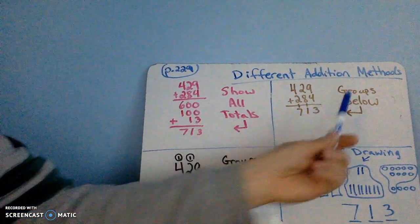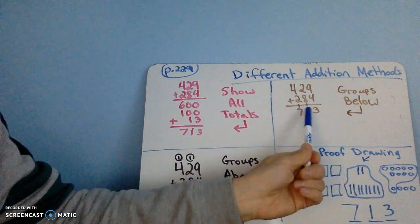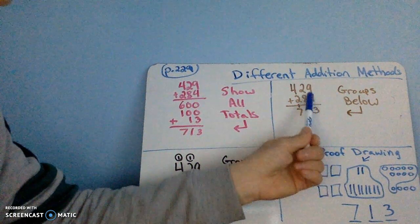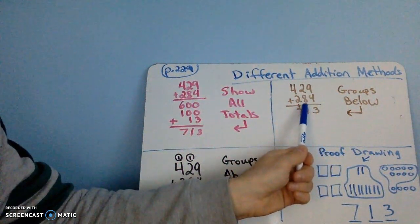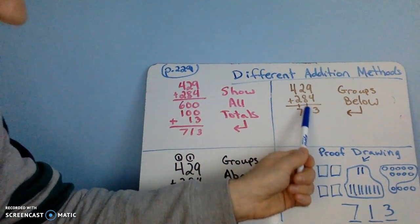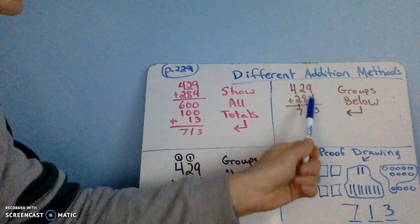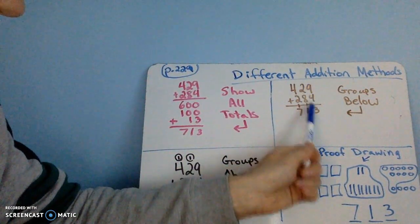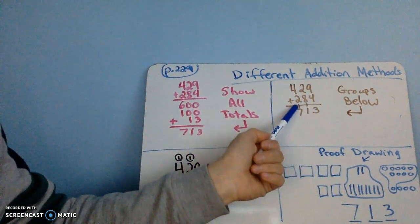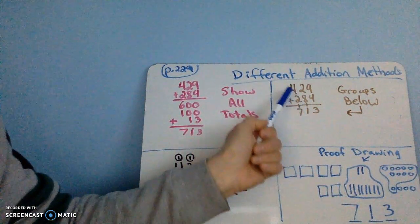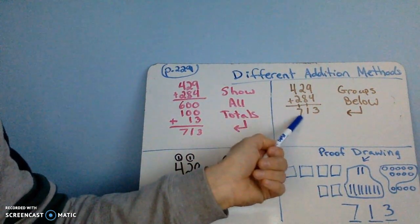Groups Below is this method — same equation, vertical. You add going down: 9 plus 4 is 13, and you have 1 ten, but you put it right on this little line. It's almost hard to see. This is not my favorite method. Then you add going down, which is 10 plus 1 new 10 is 11. Another new 10 on the line — again, you barely see it. And then 4 plus 2 is 6 plus 1 equals 7. So 713.